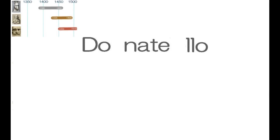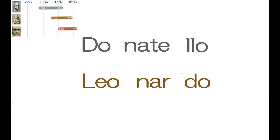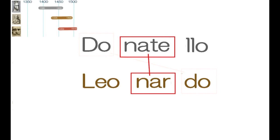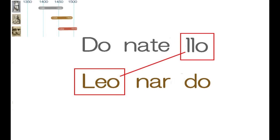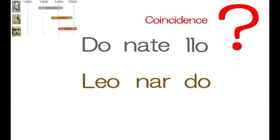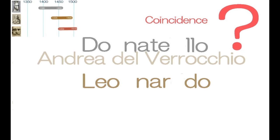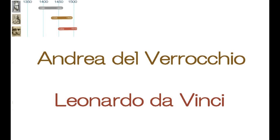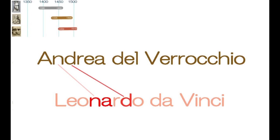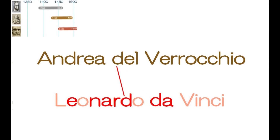Here you see the name of Donatello, and I understand Leonardo is a kind of anagram of Donatello — both sound very similar. Donatello was another great sculptor in the Renaissance, like Michelangelo. I also claim that the name of Leonardo da Vinci is an anagram of Andrea del Verrocchio, who was a master teacher of Leonardo da Vinci.